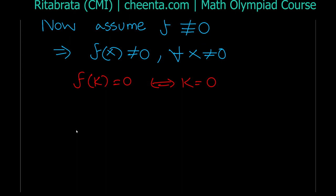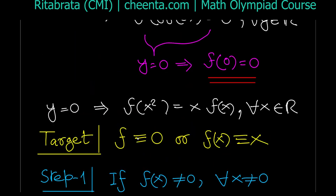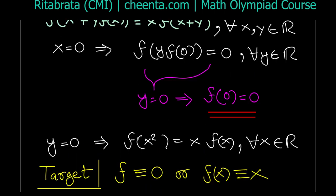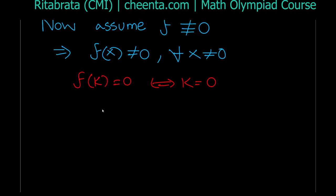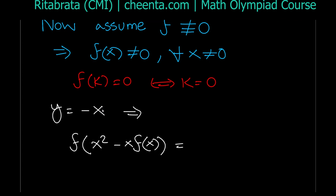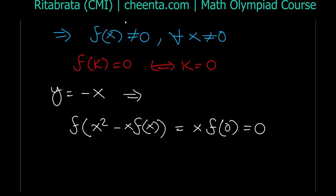Let's see what we can do. If f of something is zero, we can force that something must be zero. We want to force f of something to be zero. In the main equation we can make f(x+y) = 0 by putting y = −x. Let's try that: substituting y = −x gives f(x² − x·f(x)) = x·f(0), and f(0) = 0.